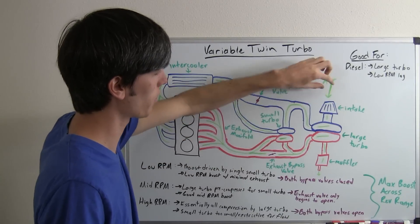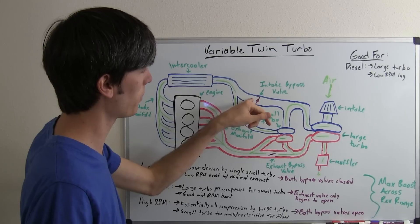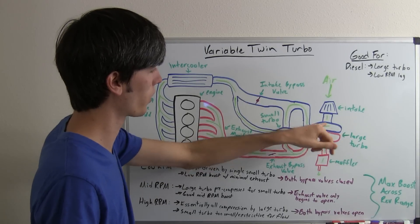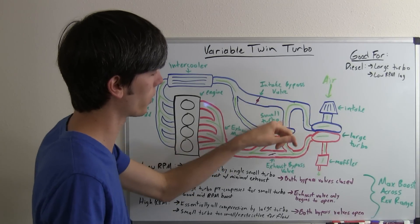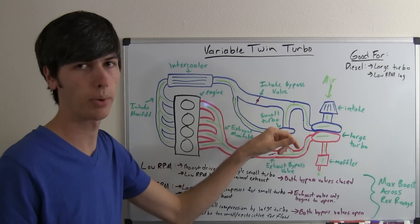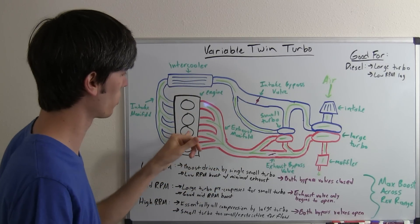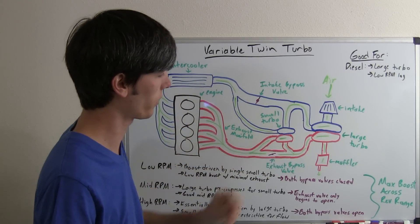This larger turbo is going to pre-compress the intake. This intake bypass valve is still going to be closed so that pre-compressed air is going to go to the small turbo which will compress it further, then send it through the intercooler into the engine, back out, and the process will repeat.